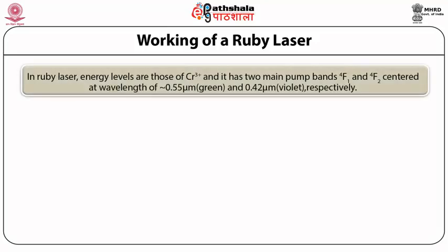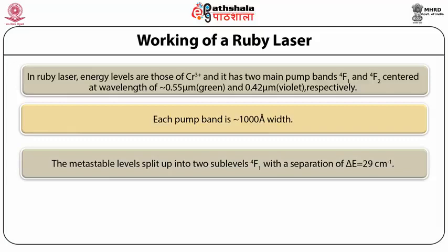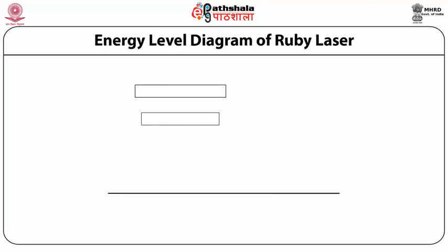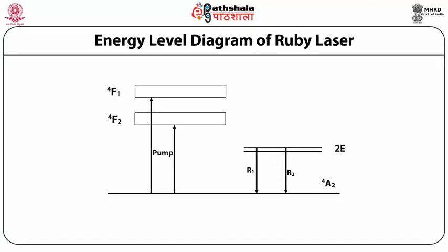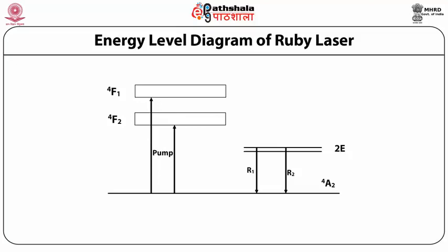In the ruby laser, energy levels are those of the chromium ion. It has two main pump bands, 4F1 and 4F2, centered at wavelengths of around 0.55 micrometer (green) and 0.42 micrometer (violet) respectively. Each pump band is around 1000 angstrom in width. The metastable levels split into two sub-levels with a separation of delta E equal to 29 cm⁻¹. The energy level diagram shows the 4F1 band, 4F2 band, metastable state, and ground level, with the main emission of the ruby laser at 6943 angstrom.